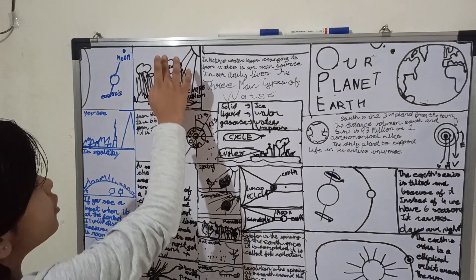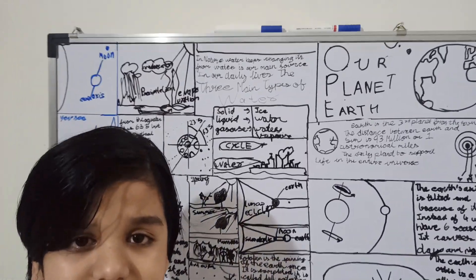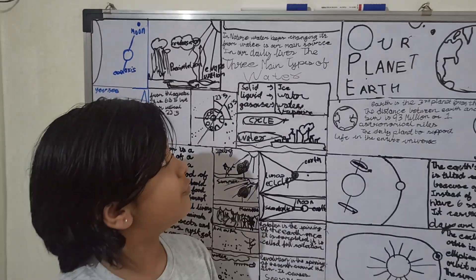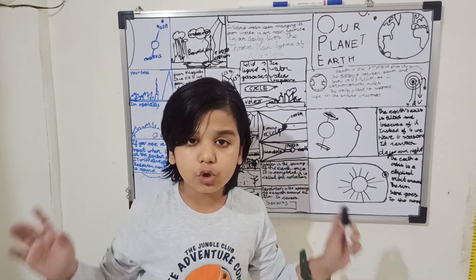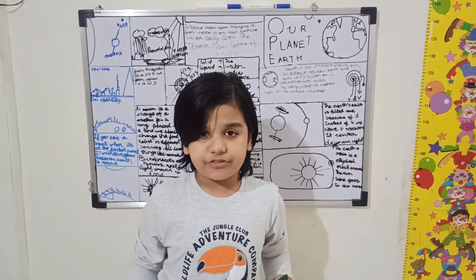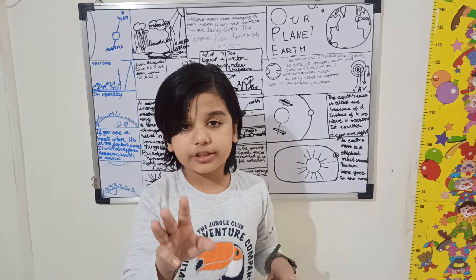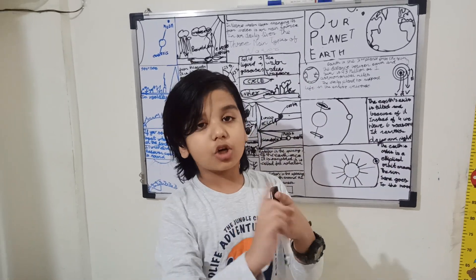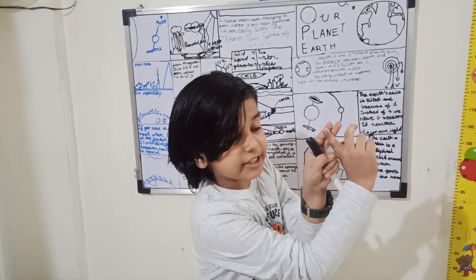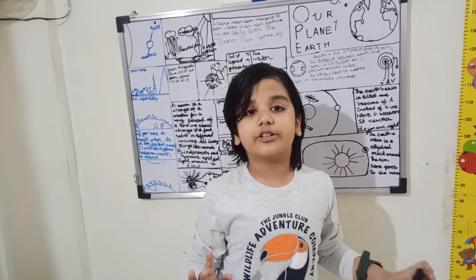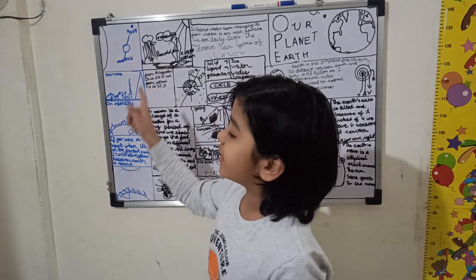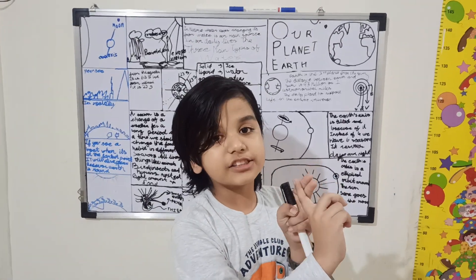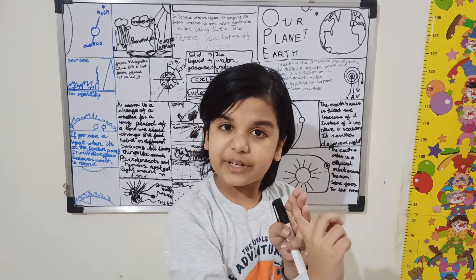The first topic we will start with is the water cycle. In nature, water keeps changing its form. Water is the main source of our daily lives. The three main types of water are solid, liquid, and gaseous. Solid is ice, liquid is water, and gaseous is water vapor. In the water cycle, we need to remember three things: evaporation, condensation, and precipitation.